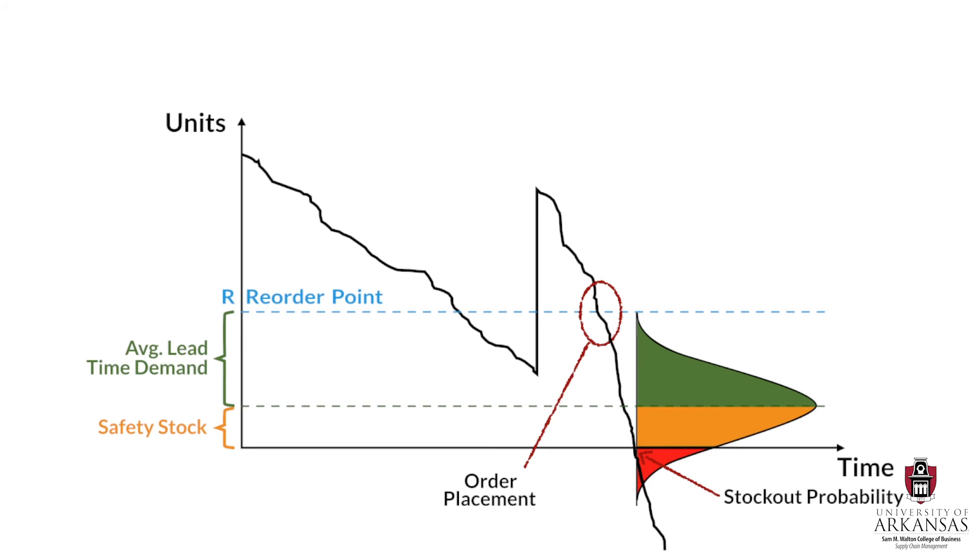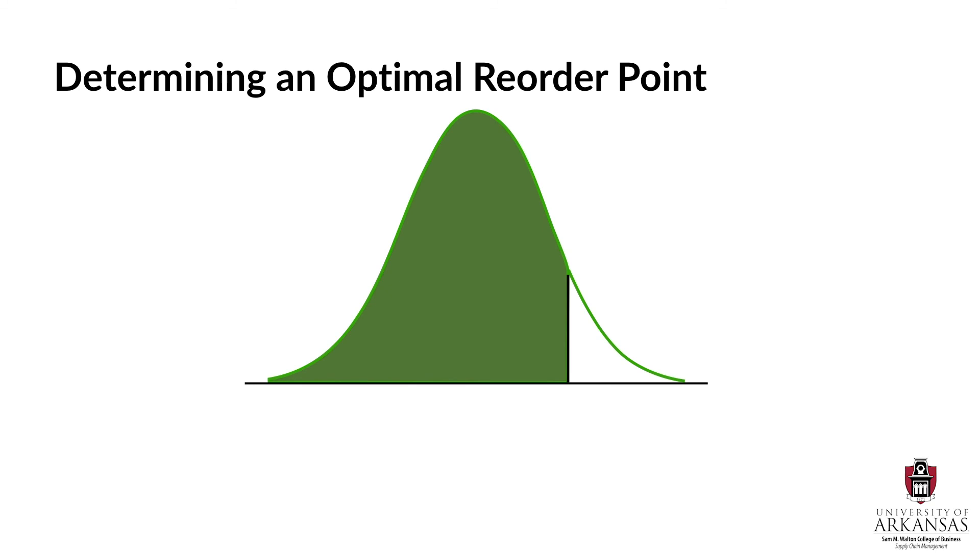Now let me flip the distribution of lead time demand back into its upright position, so to speak. The point I am trying to make here is how we can determine an optimal reorder point given an optimal in-stock rate. This in-stock rate tells us how much safety stock we need to add to average lead time demand, DL bar. In this context, let me introduce what we call the standard normal variant Z. Z is simply the number of standard deviations we have to add to the mean so as to cover the desired probability mass under the distribution of lead time demand. In other words, the product of Z and the standard deviation of lead time demand, sigma sub DL, will give us the desired safety stock level. And when we add that to average lead time demand, we get our optimal reorder point, R star.